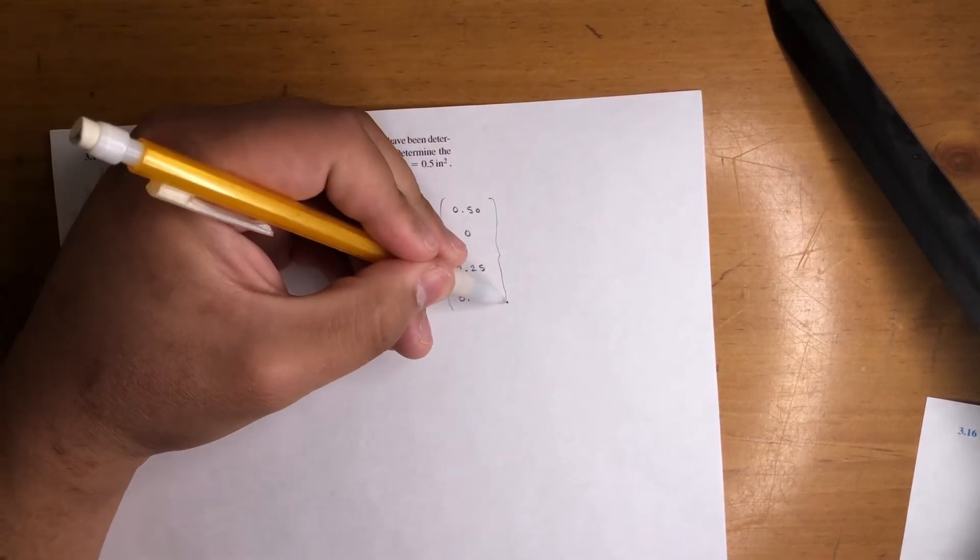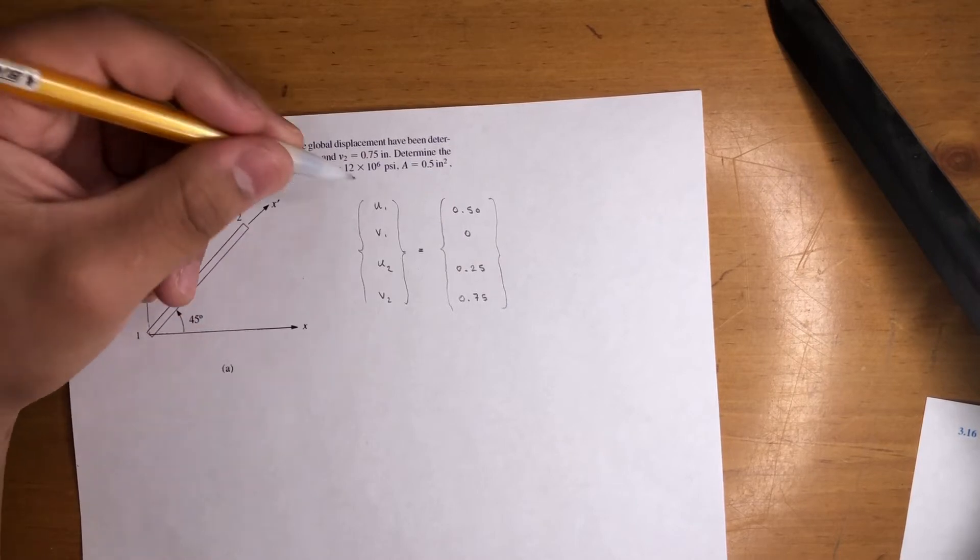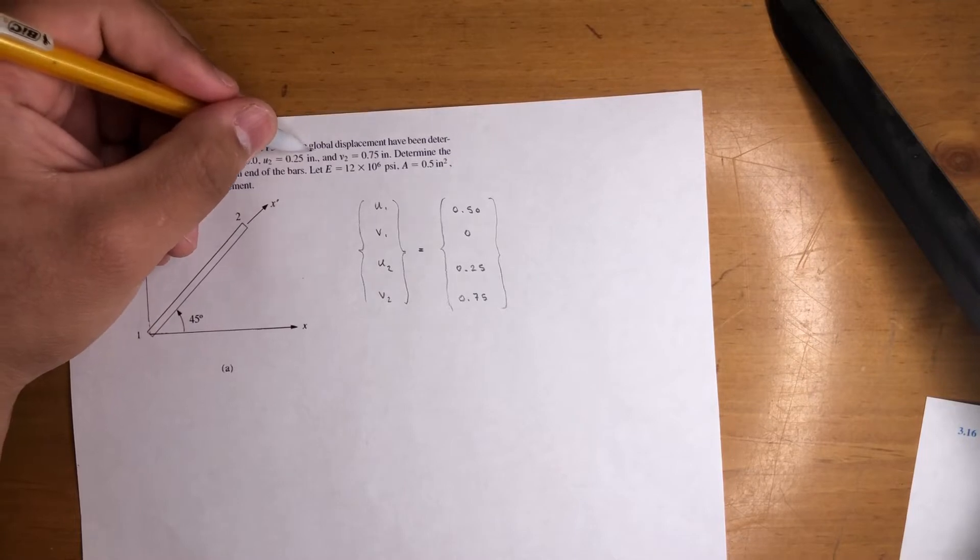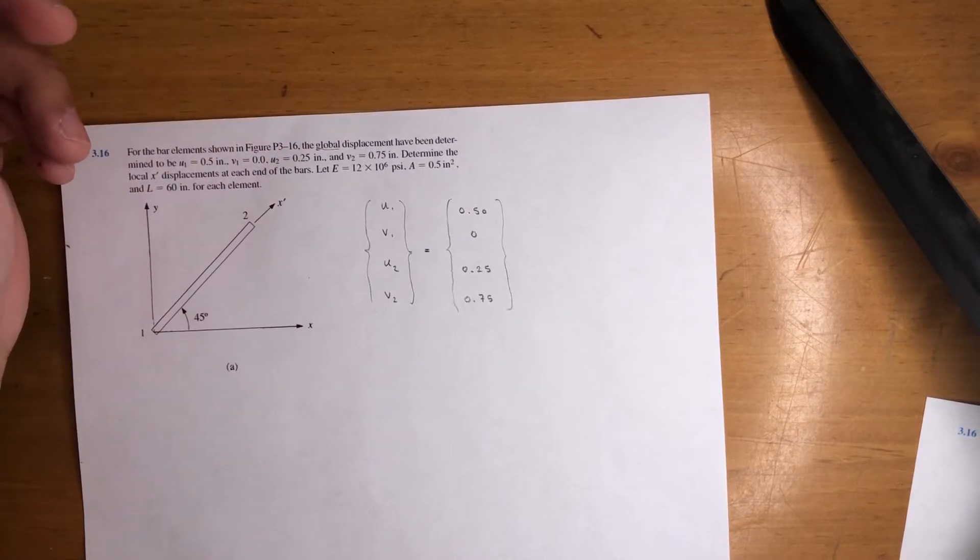So again, this is the global displacement vector, meaning that's the X and Y coordinates of each node at the global scale.